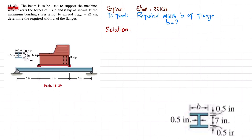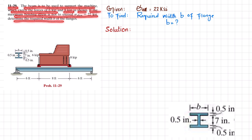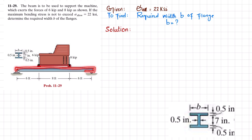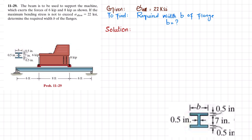Welcome back. Problem 11-29: the beam is used to support a machine which exerts forces of 6 kips and 8 kips as shown. If the maximum bending stress is not to exceed 22 ksi, determine the required width of the flange. This is a wide flange beam, and the cross-section is shown. We need to find the width of the flange.